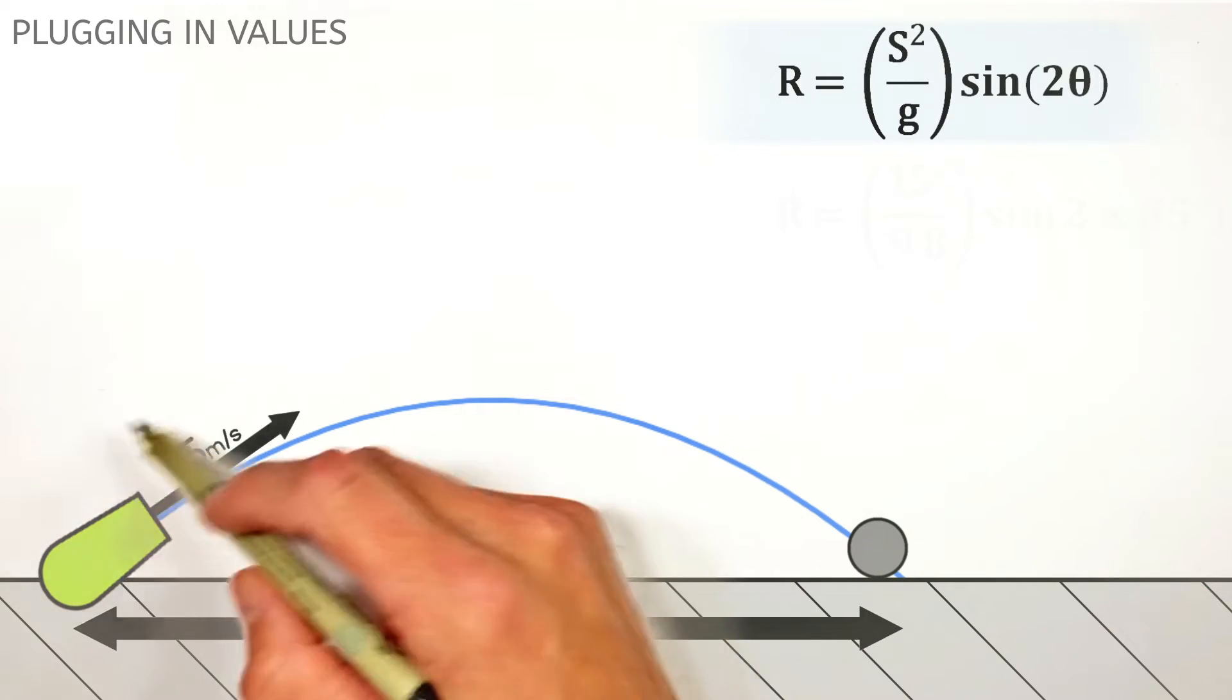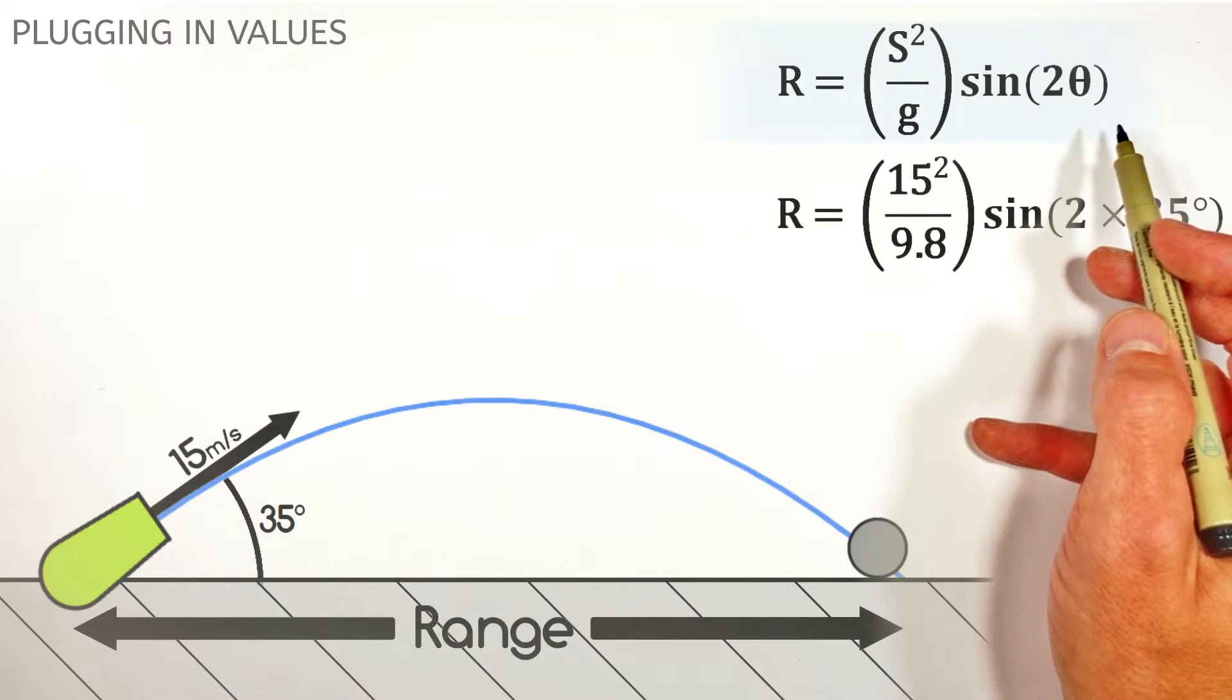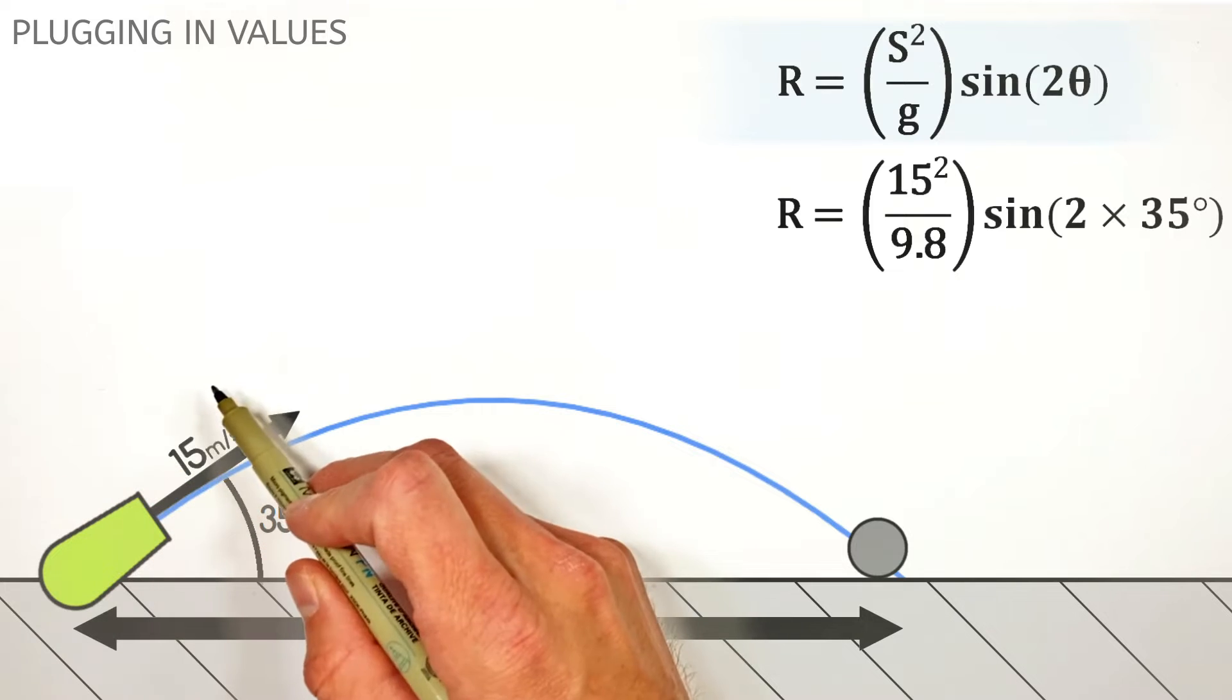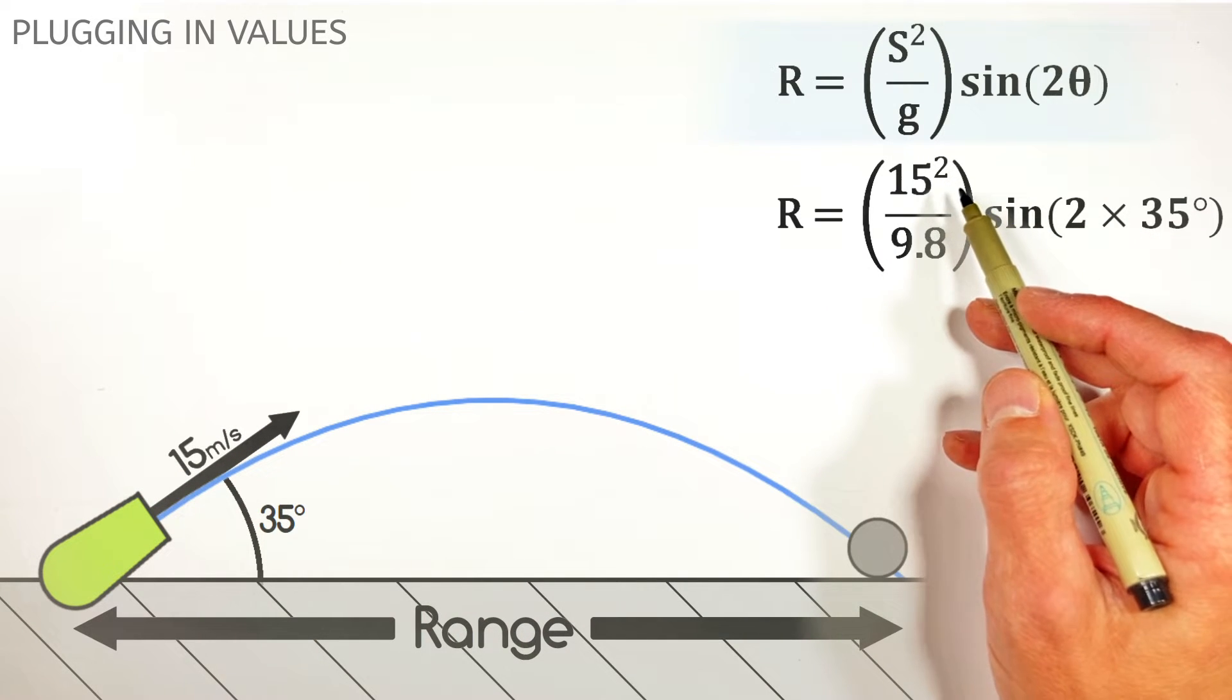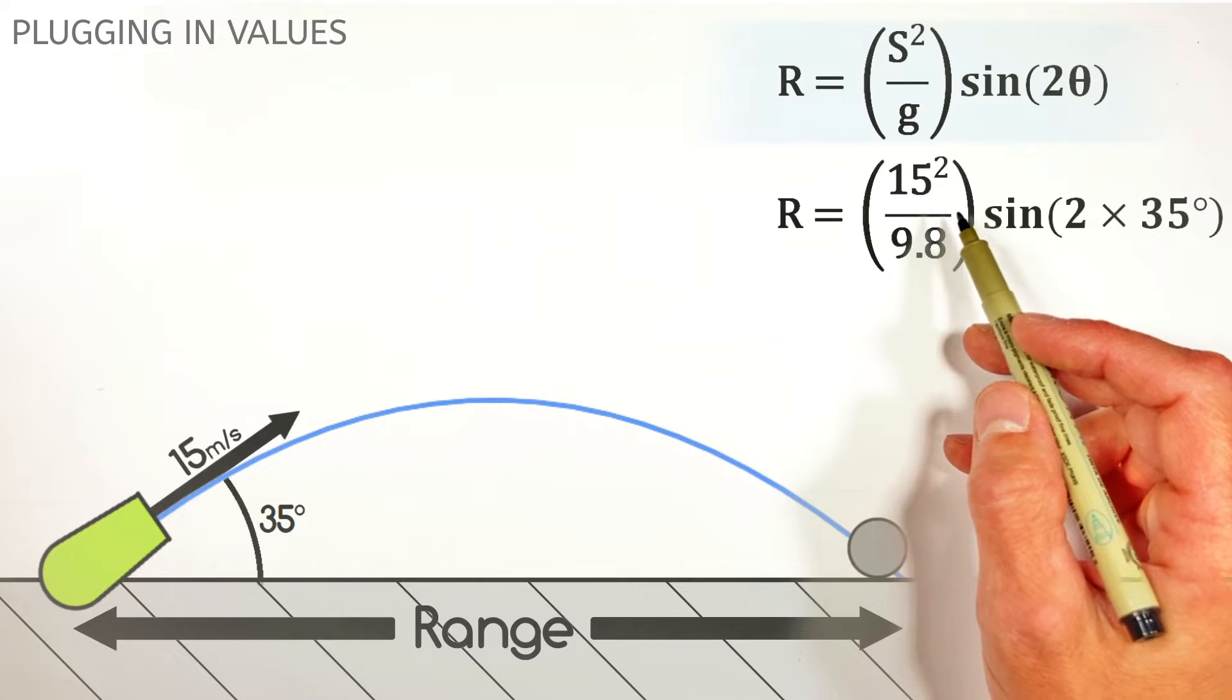And all we have to do is just plug in the values in this problem into the equation. You see, we know the initial speed of the projectile, that's 15 meters per second.